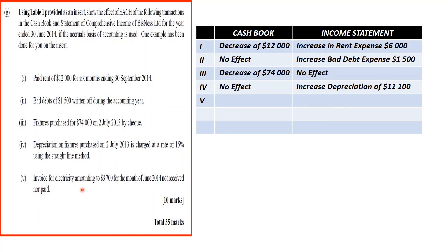An invoice for electricity amounting to $3,700 on the 30th of June 2014 not yet received or paid. Since it does not involve any cash, it will not affect the cash book, and there would be an increase in electricity expense of $3,700 in the income statement.